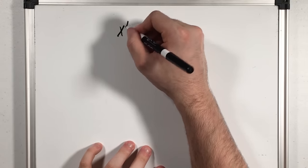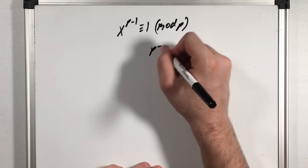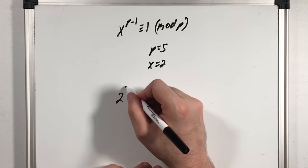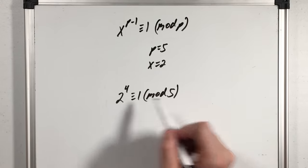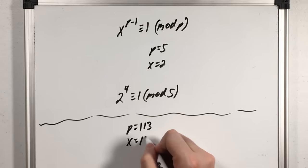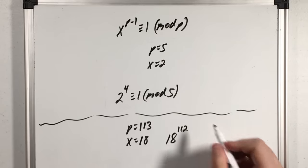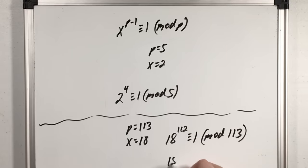Now those are some of the basics, but there are so many theorems in this field that no one video could cover. But a lot of them show some really interesting relationships between numbers when it comes to primes, divisibility, and so on. For example, if I pick a prime p and raise any integer to the p minus 1, it will be congruent to 1 mod p. If we let p equal 5 and x equal 2, we can see that 2 to the 4th, or p minus 1, is congruent to 1 mod 5. Since 2 to the 4th is 16, 16 minus 1 is 15, which is divisible by 5. But instead, if p is 113 and x is 18, I know that 18 to the 112, or p minus 1, is congruent to 1 mod 113. I have no idea what this number is, but I know that if I subtract 1 from it, that will be divisible by 113.